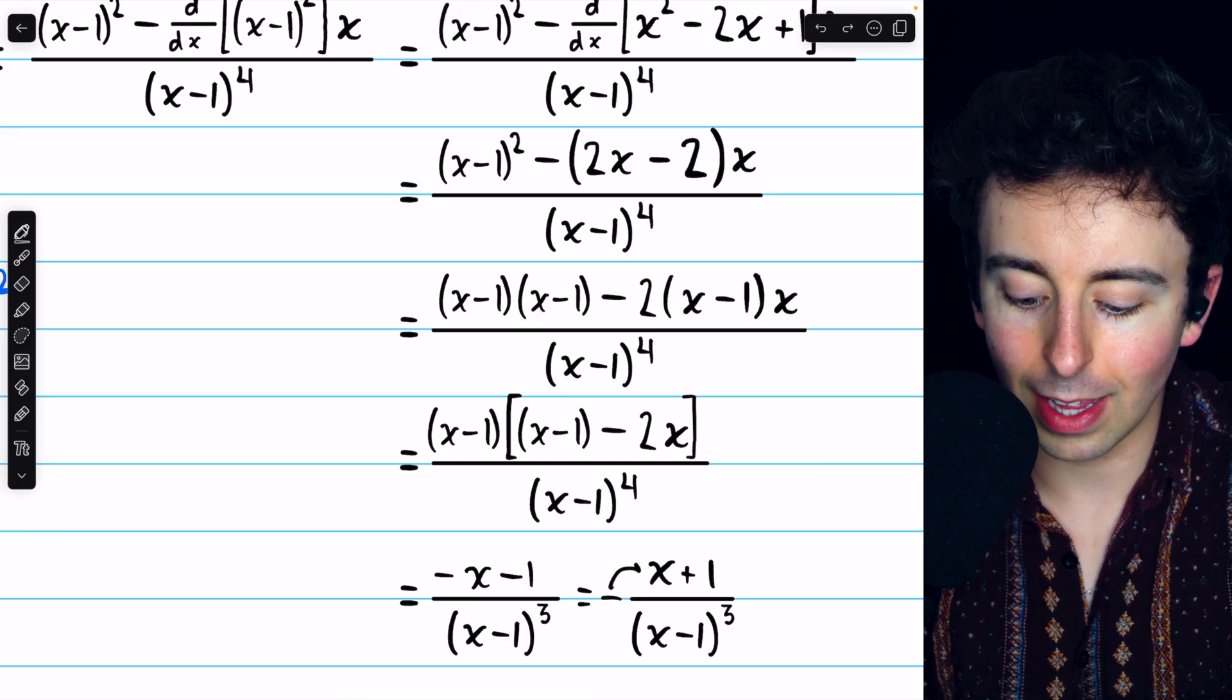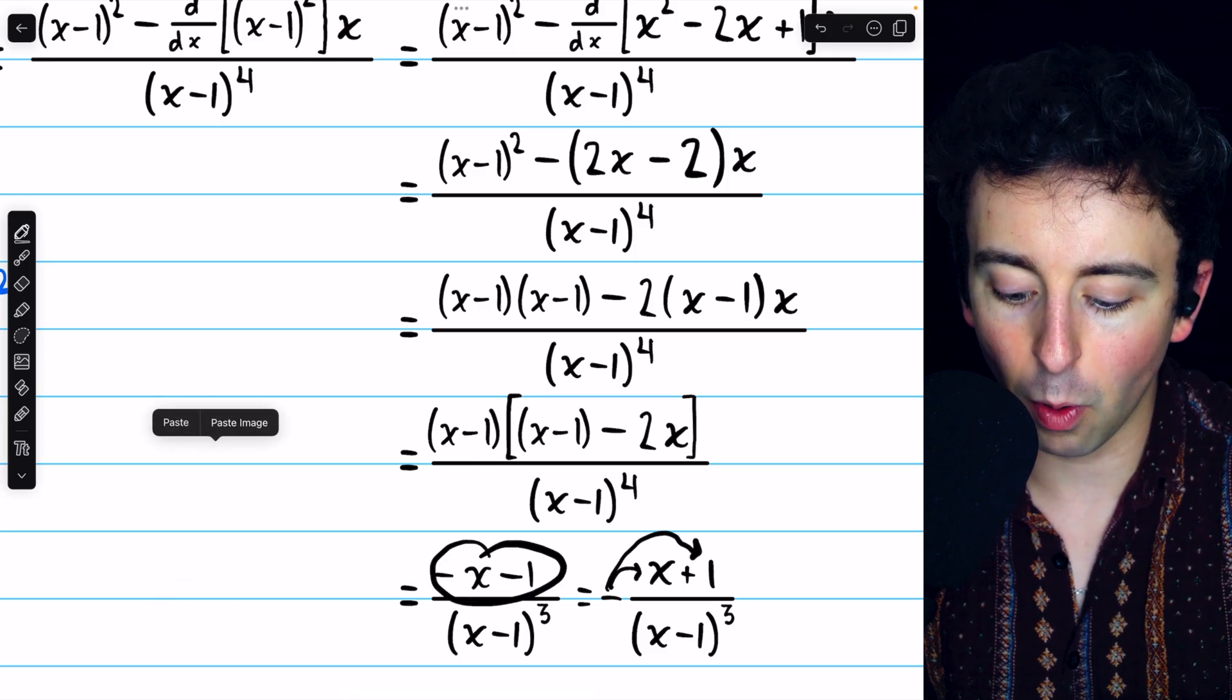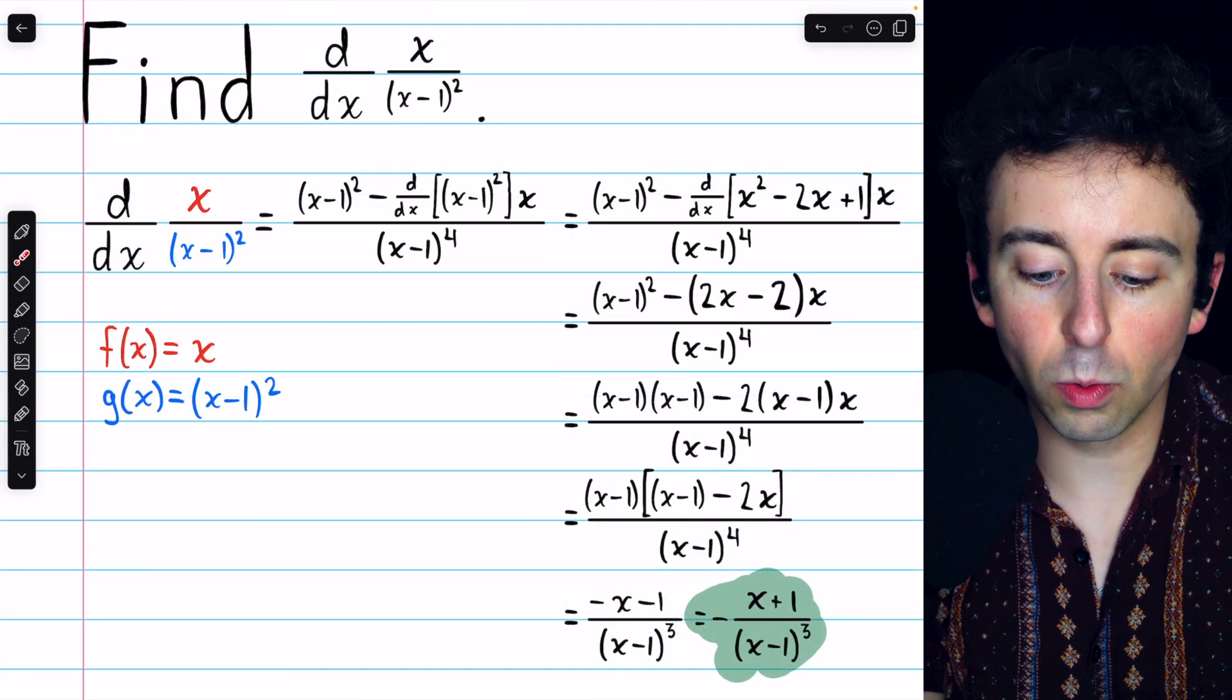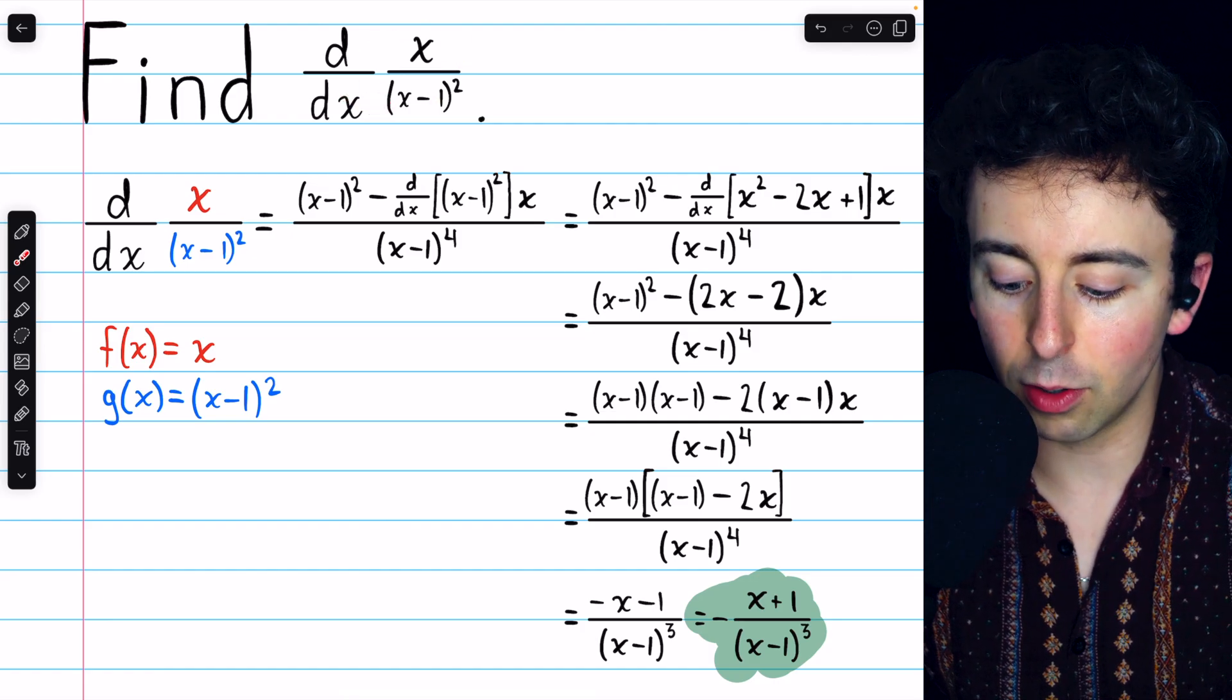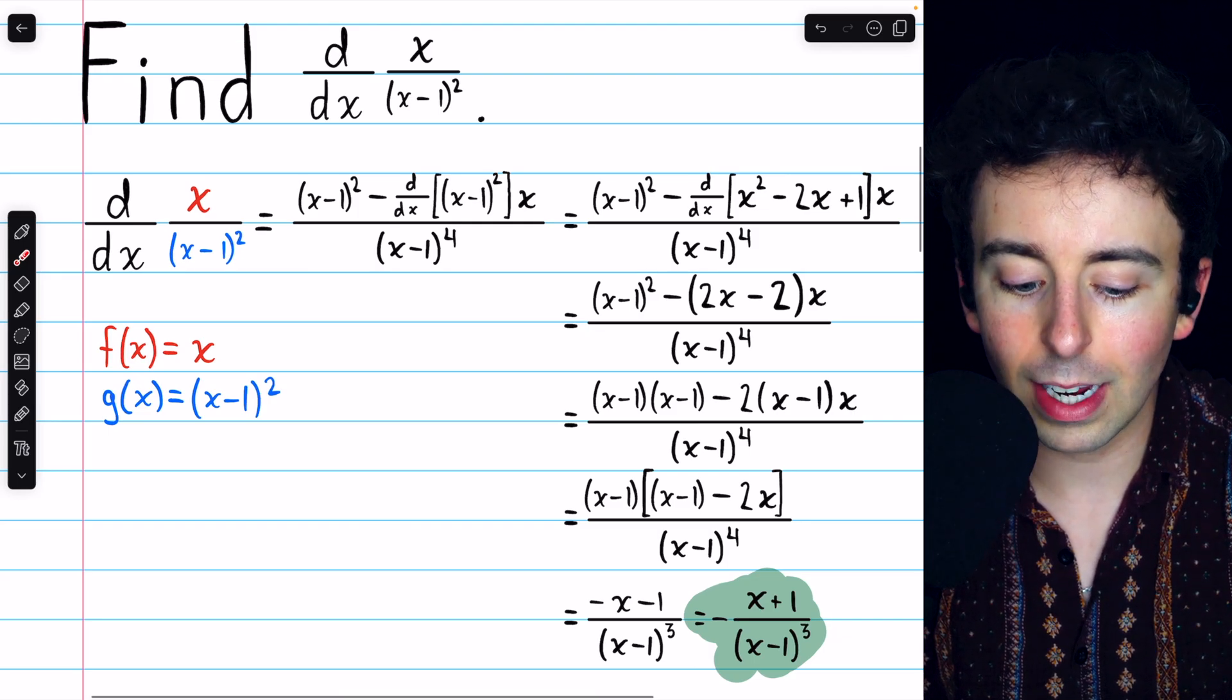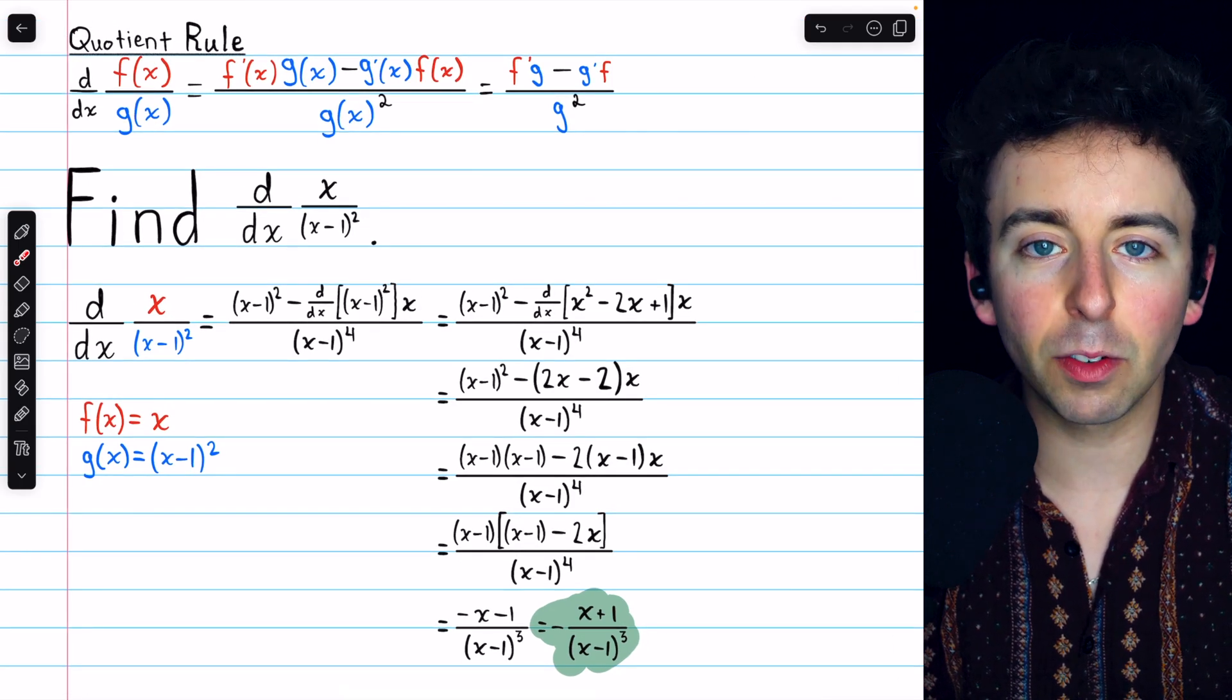You can see if we distributed that negative back through, we'd have negative x minus 1 just as before. But that is about as simple as we're going to get this derivative. So that's how to use the quotient rule to find the derivative of x over x minus 1 squared, and some of the steps we can take to simplify our final answer. Let me know in the comments if you have any questions. And be sure to check out my Calculus 1 course and Calculus 1 exercises playlists in the description for more. Thanks for watching.